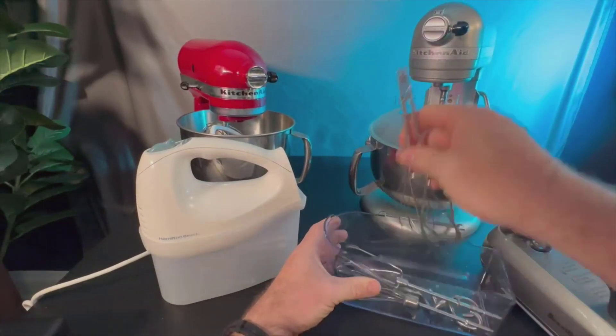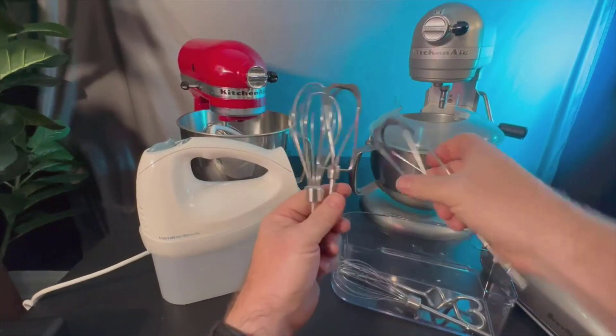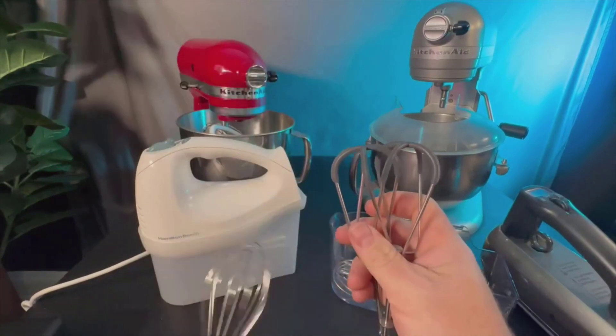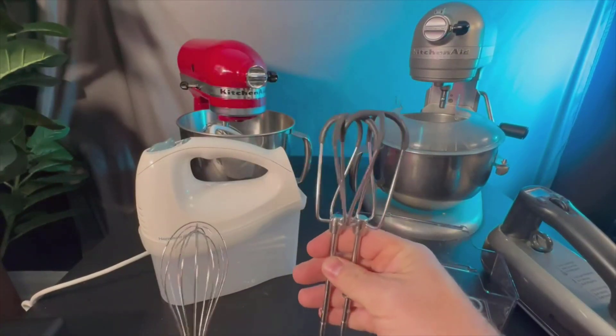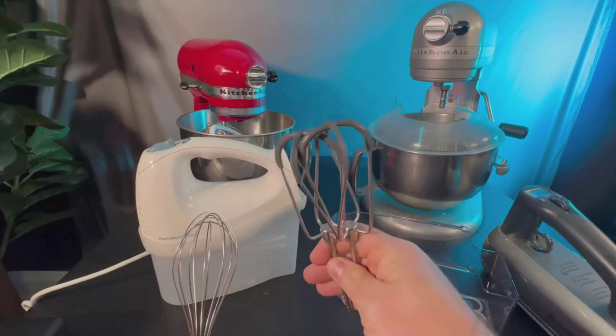And the actual beaters are a little bit of an upgrade as well. So the beaters have this rubber piece here. So if you're putting this in a pan that you don't want to get scratched or a pot or something, it's not going to scratch it. That way you can use it there.